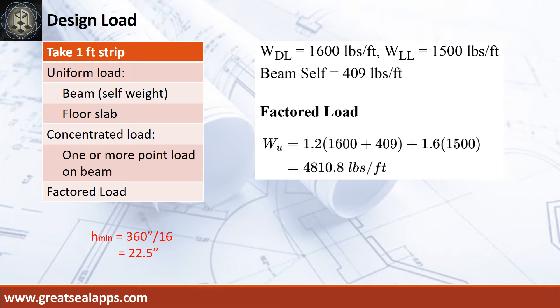The beam self-weight is 409 pounds per foot, for a total factored load of 4,810.8 pounds per foot.